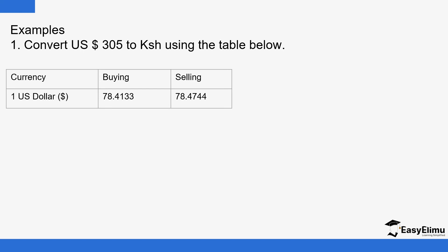The bank deals in this business with the intention of making profit. So you always expect the selling value to be higher than the buying value for a particular currency. In this case, one dollar was buying at 78.4133 Kenya shillings per dollar.